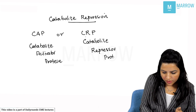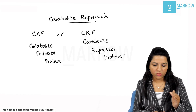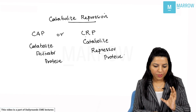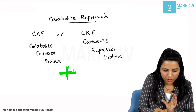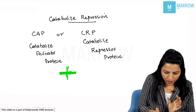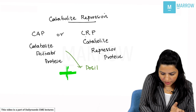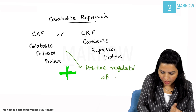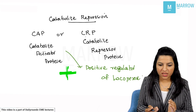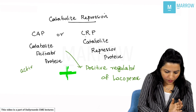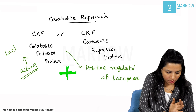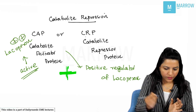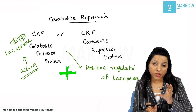CAP or CRP — the name might confuse you about whether it is activating or repressing. What happened is this CAP is a positive regulator. CAP is a positive regulator of the lac operon — which means if CAP is active, then the lac operon is switched on. That is what I've shown with a plus symbol.